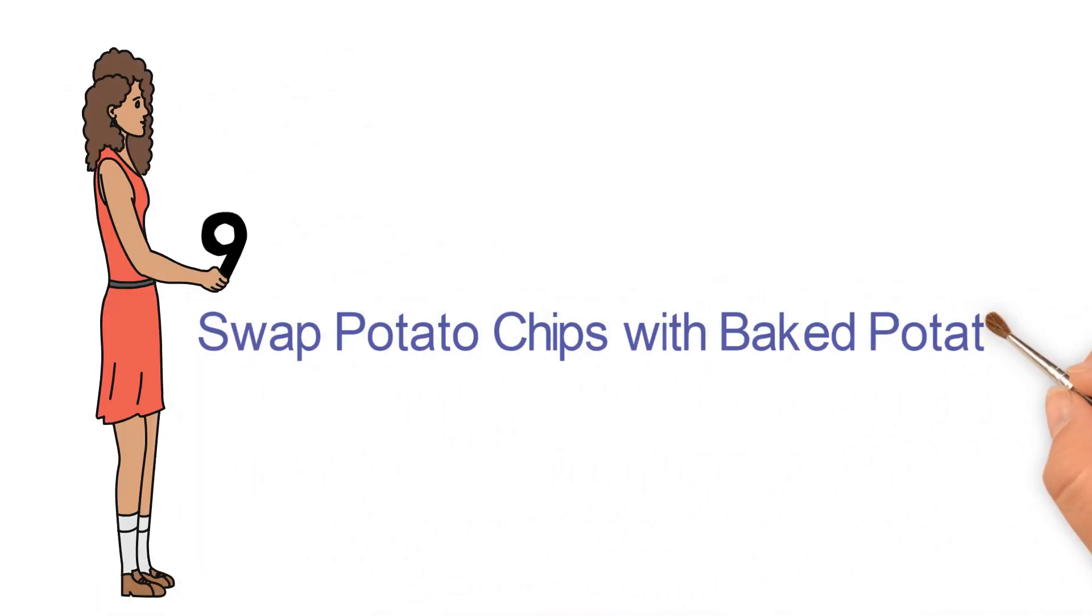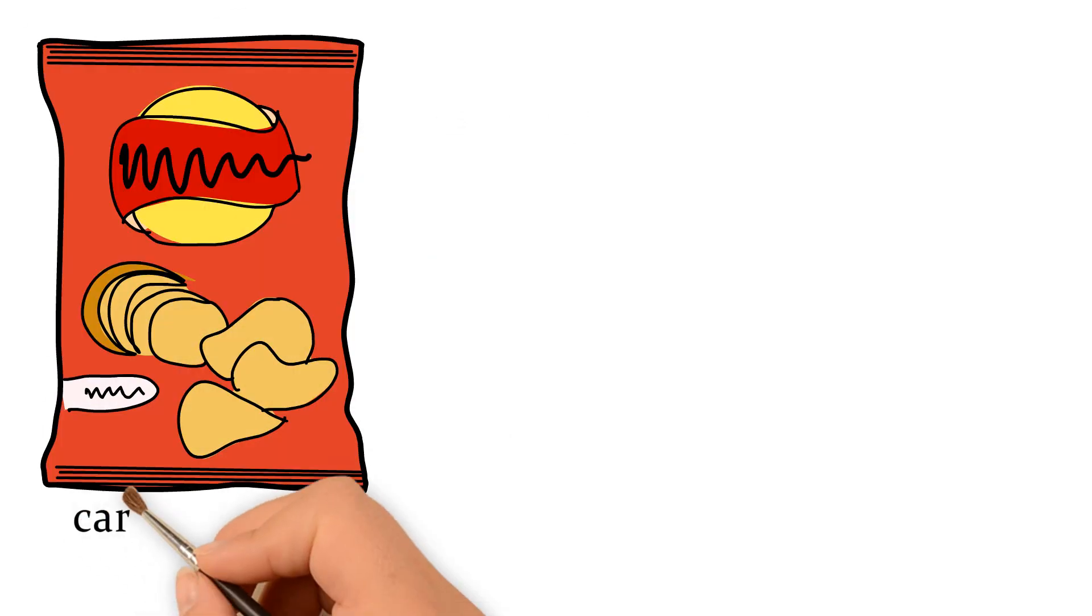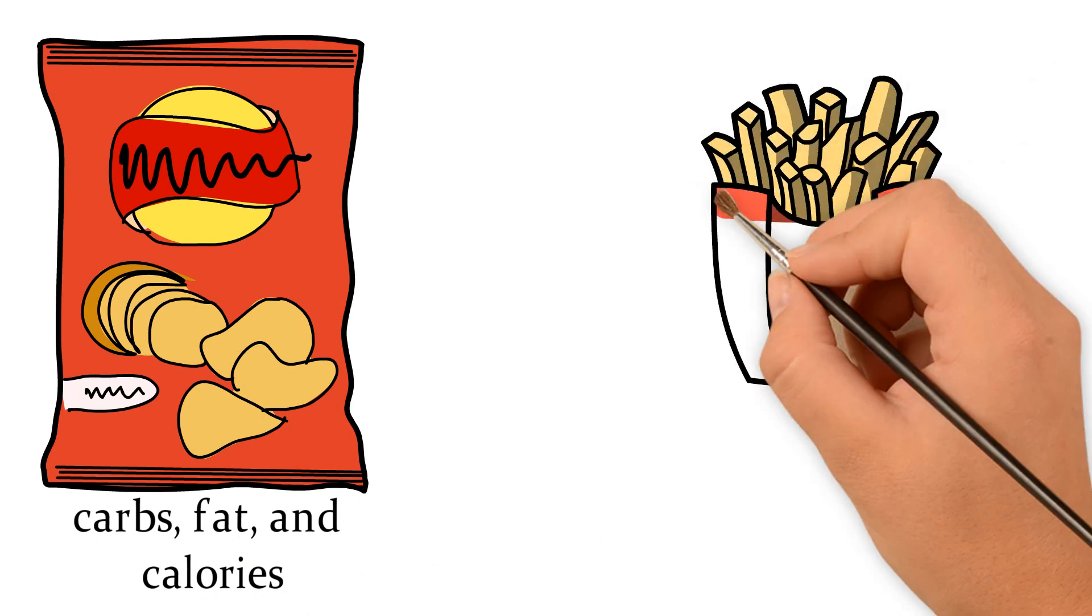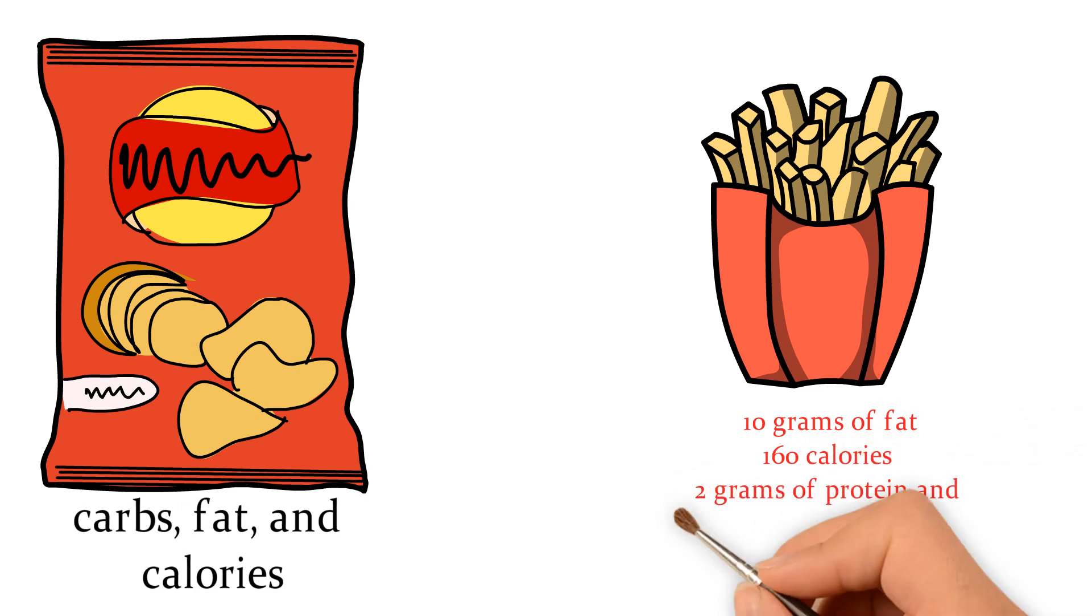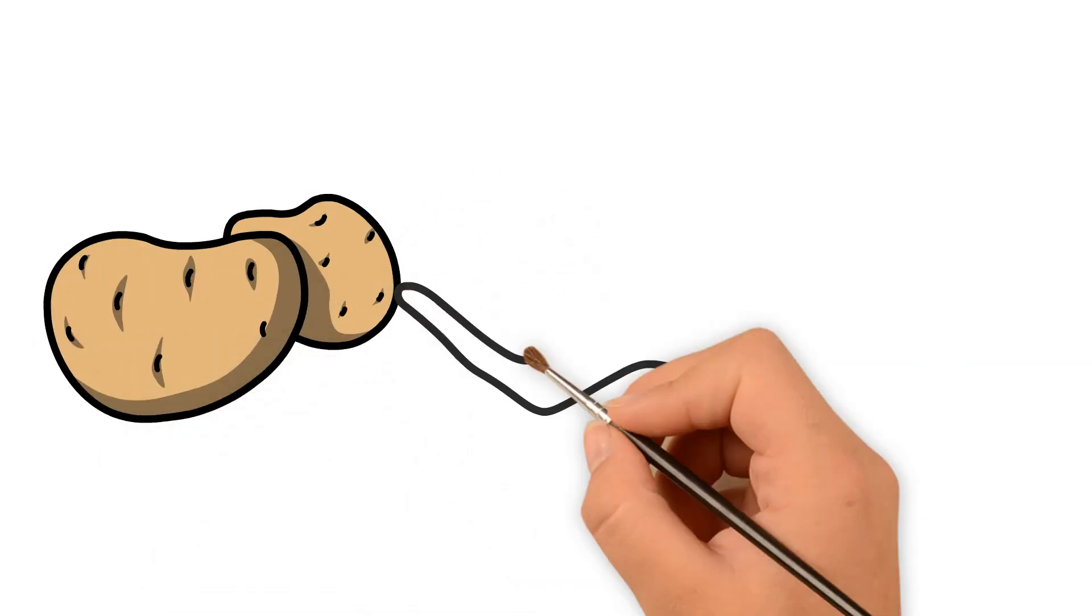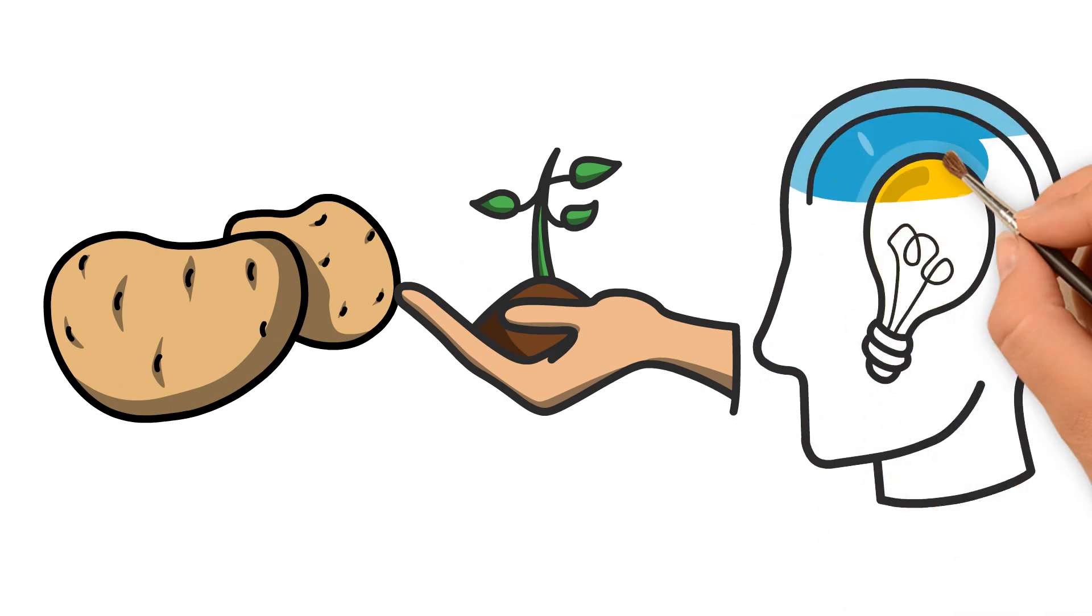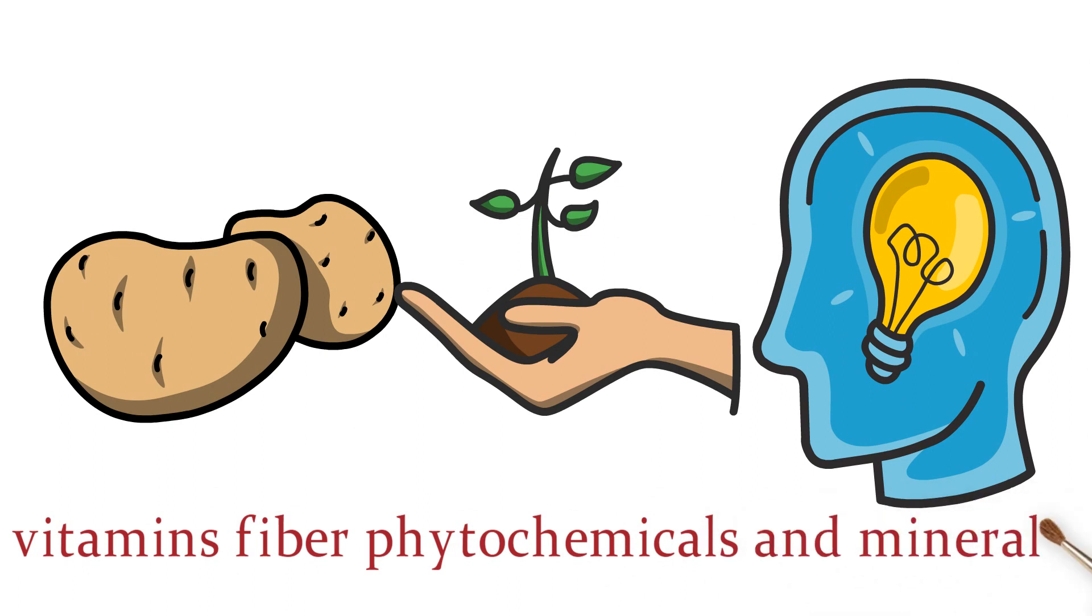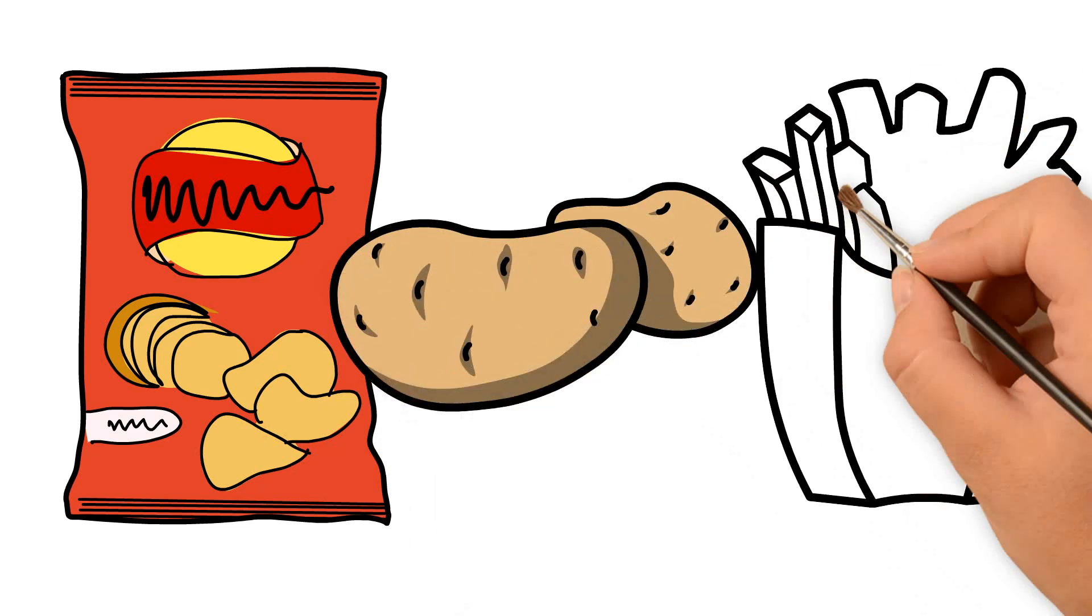9. Swap Potato Chips with Baked Potatoes. Notwithstanding its crunchy appeal, potato chips are loaded with carbs, fat, and calories. A single serving of potato chips can provide 10 grams of fat, 160 calories, 2 grams of protein, and 15 grams of carbohydrate. Having baked potatoes with a sprinkling of flavored herbs or delicious condiments at home can be a better idea. Baked potato contains vitamins, fiber, phytochemicals, and minerals, which offer several health benefits.